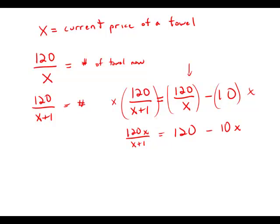Well, now I'm going to multiply both sides by x plus 1, remembering to multiply all terms. It cancels on the left, so I get 120x.